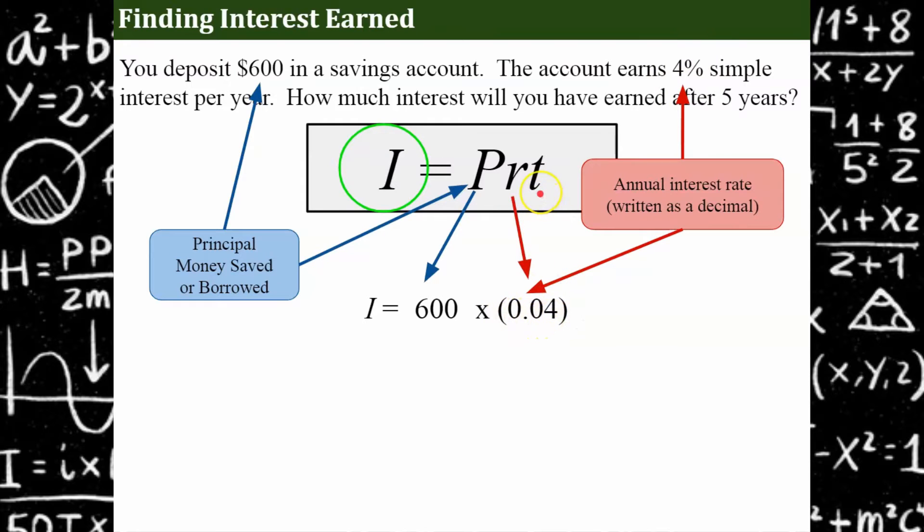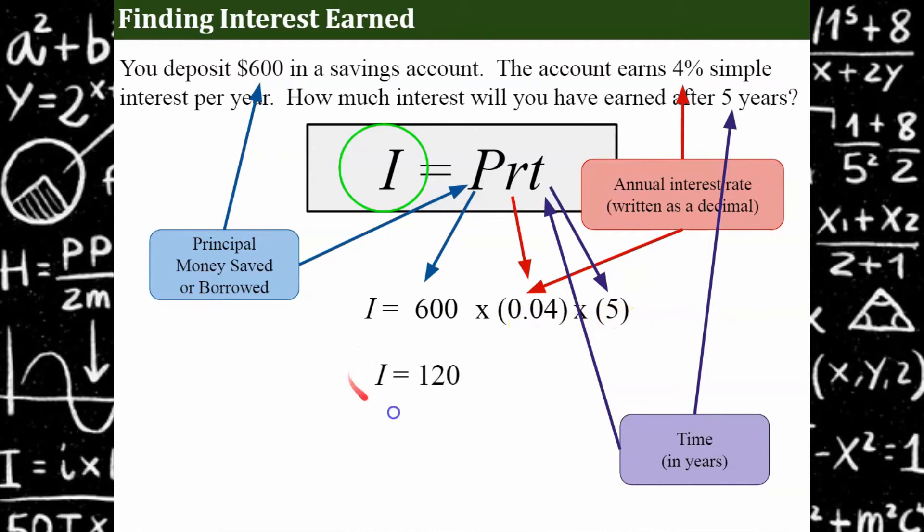And then the final, the fourth component is our time. And they're telling us that our time is five years. So we're going to multiply by five. So now you just need that handy dandy calculator, 600 multiplied by 0.04 multiplied by five and hit the equal sign, and you get 120. What does this answer mean? This answer means that after five years, you will have earned in interest $120.